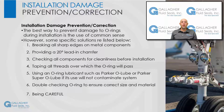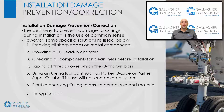How do you prevent or correct installation damage to an O-ring? Probably the best way to prevent damage to O-rings during installation is the use of good old fashioned common sense. However, here are some specific solutions: breaking all sharp edges on metal components, providing a 20 degree lead-in chamfer, checking all components for cleanliness before installation, taping all threads over which the O-ring will pass, using an O-ring lubricant such as Parker O-Lube or Parker Super O-Lube if its use will not contaminate the system, double checking the O-ring to ensure the correct size and material, and finally, being careful.